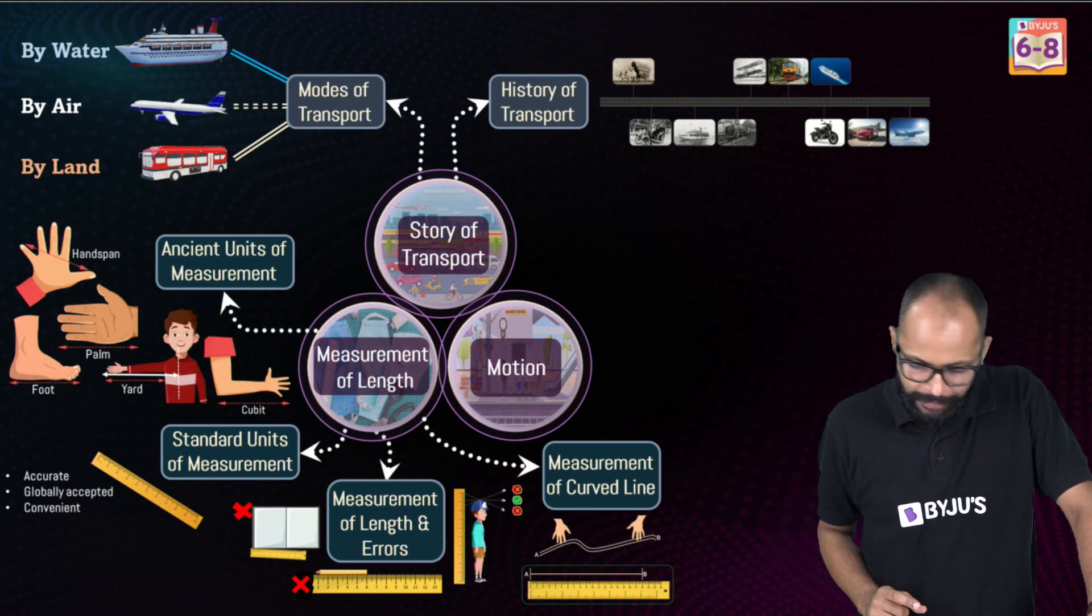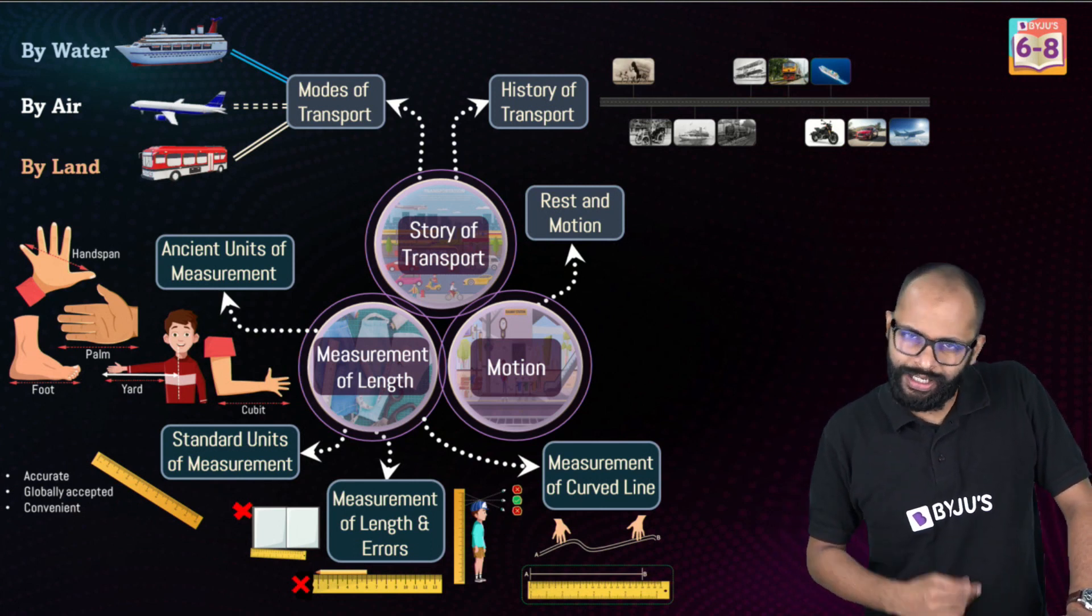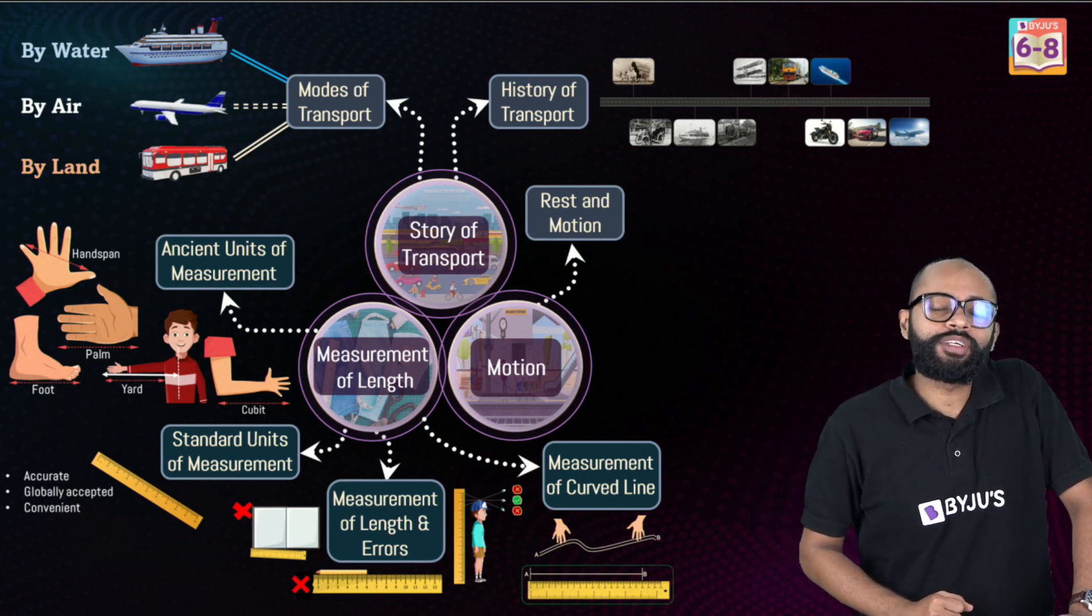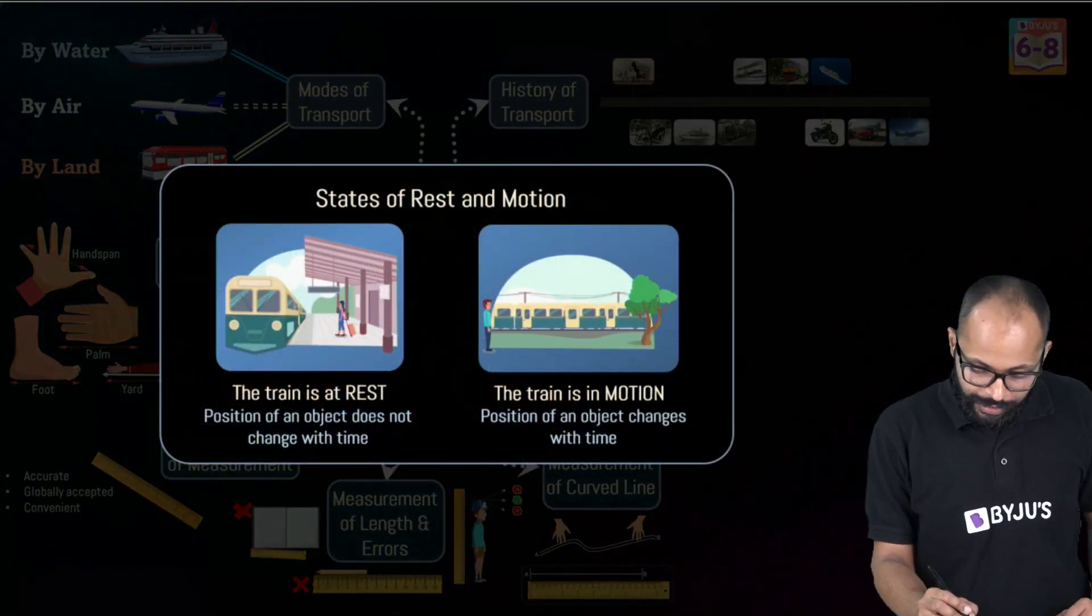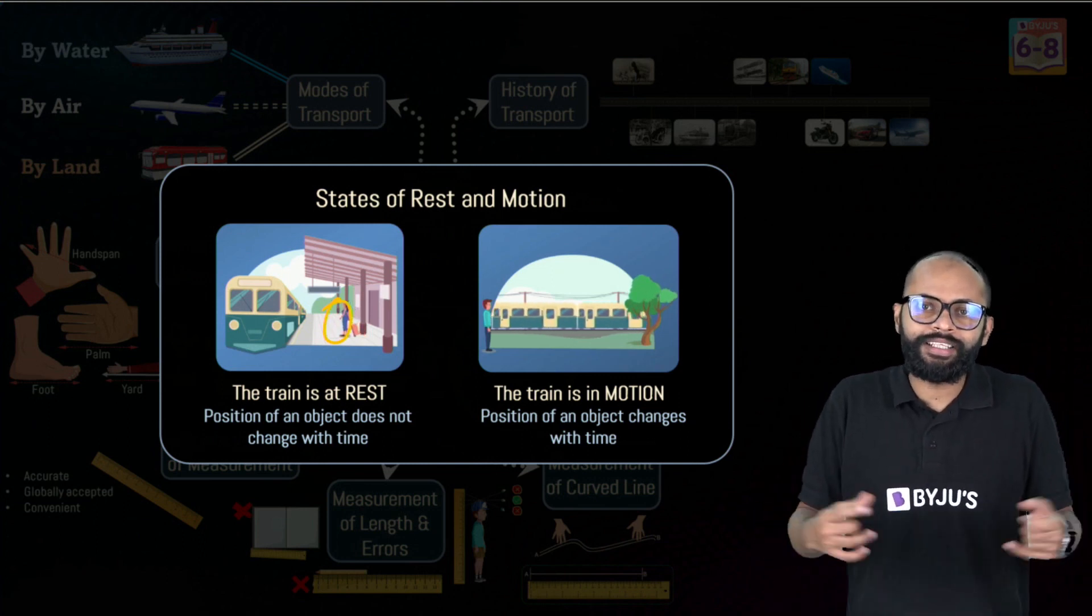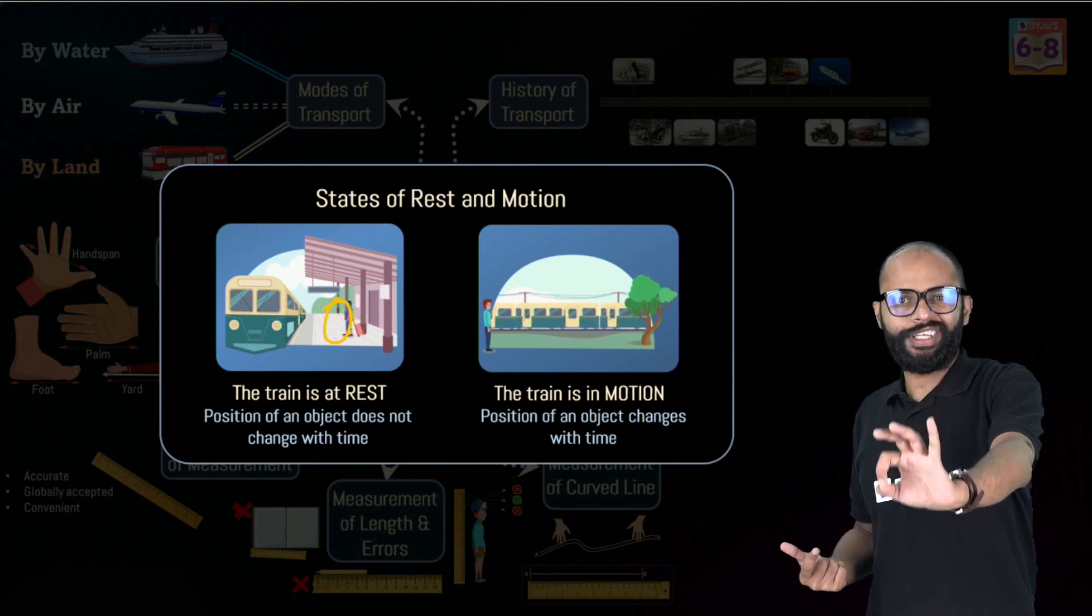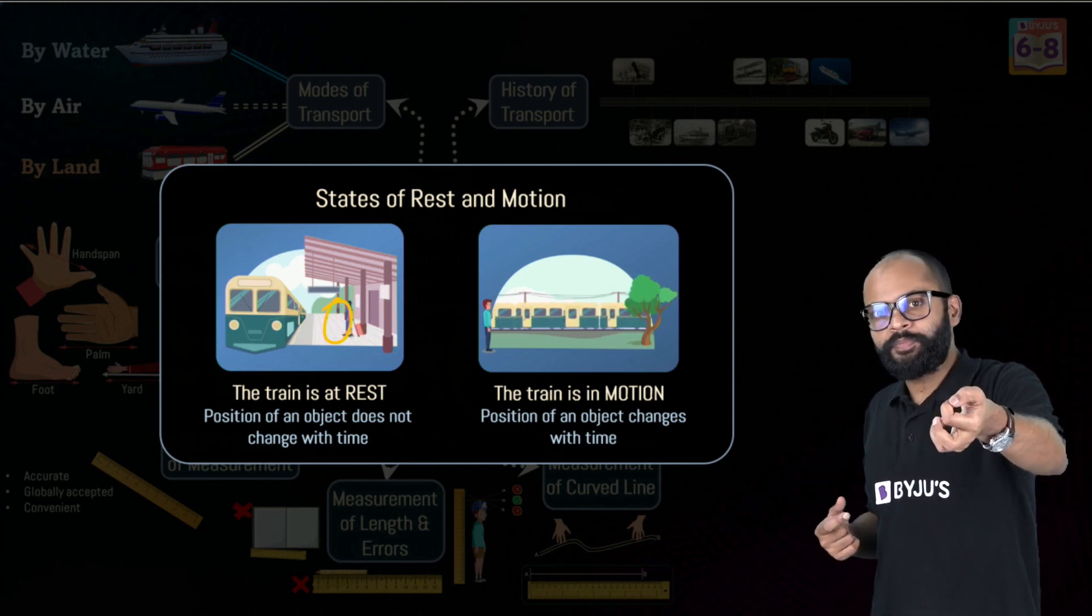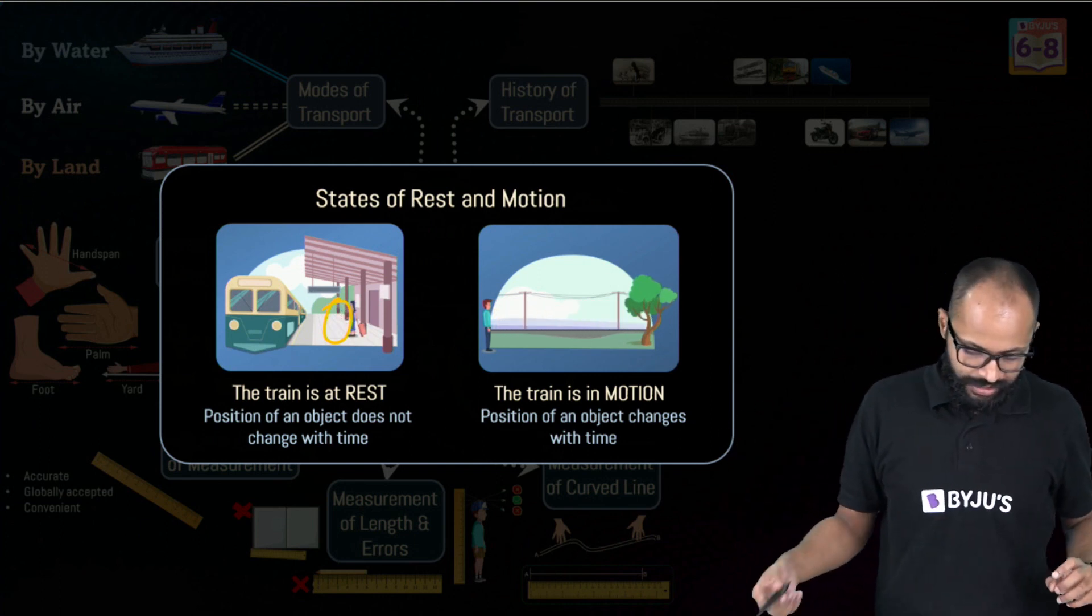Next is about motion. Rest and motion - it is the concept of rest and motion. I have discussed this in great detail that motion is relative. The train is at rest with respect to this girl, why? Because the girl is also on the ground, the train is also on the ground, both are standing. The position of train is not moving with respect to the girl, that's why it is at rest. If position stays the same with respect to time, or the position remains the same as time passes with respect to an observer, then we say it is at rest.